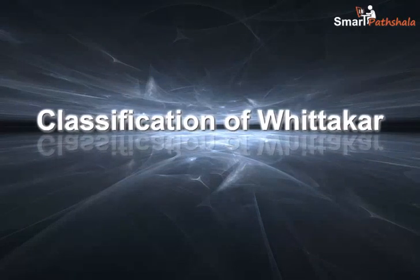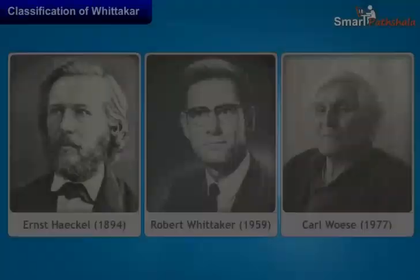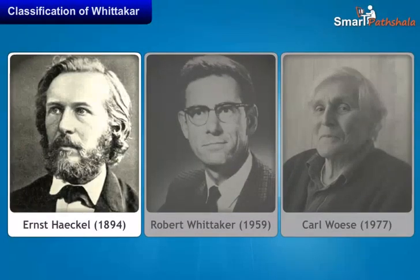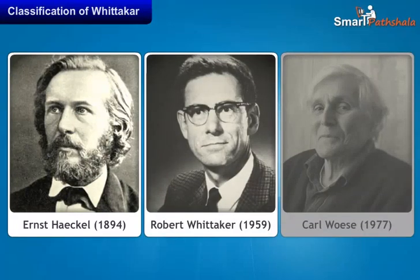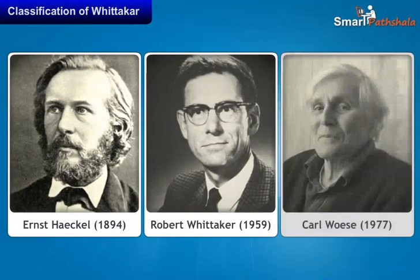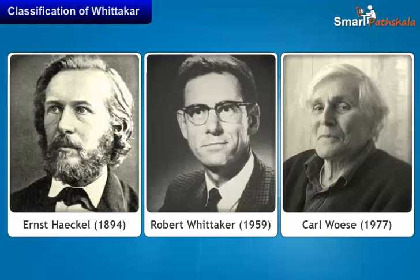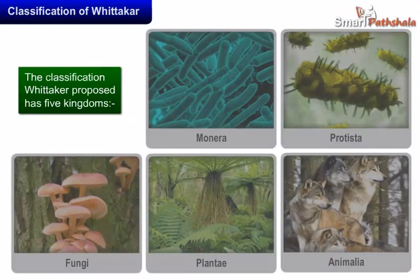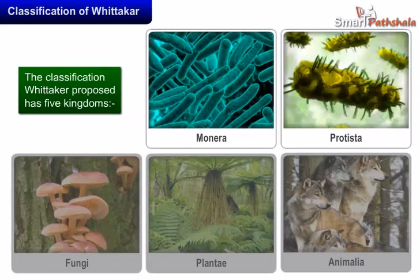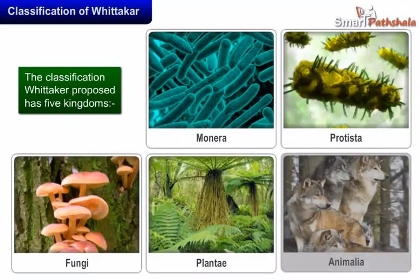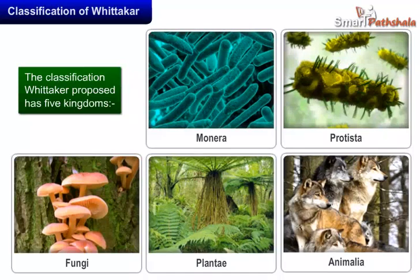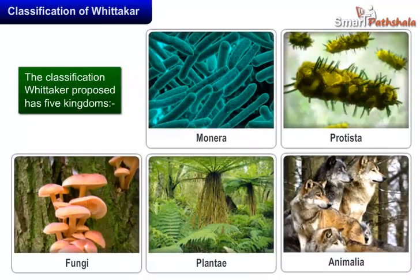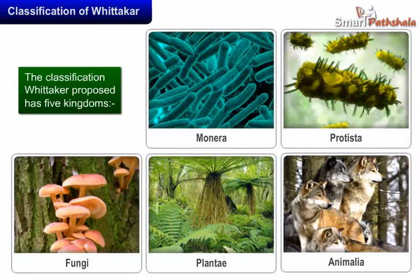Classification of Whittaker. Biologists such as Ernst Haeckel 1894, Robert Whittaker 1959, and Carl Weiss 1977 have tried to classify all living organisms into broad categories called kingdoms. The classification Whittaker proposed has five kingdoms: Monera, Protista, Fungi, Plantae, and Animalia. These groups are formed on the basis of their cell structure, mode and source of nutrition, and body organization.